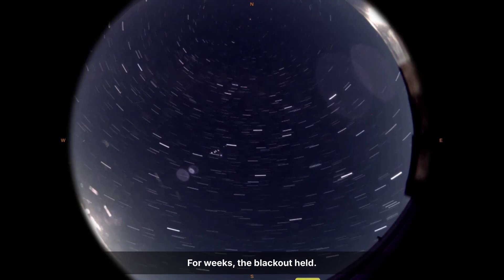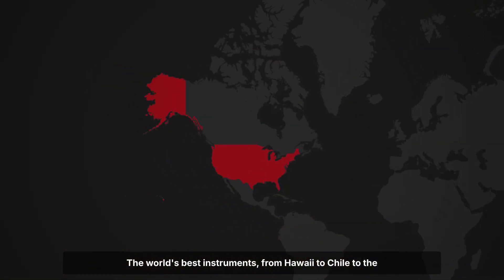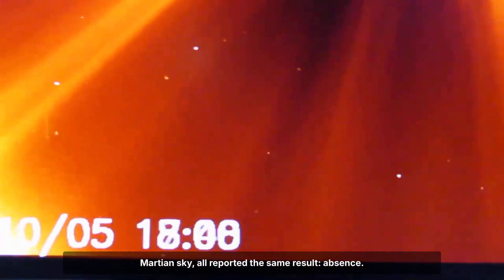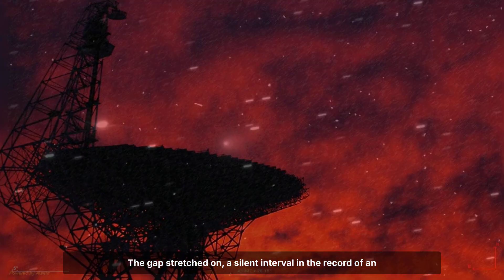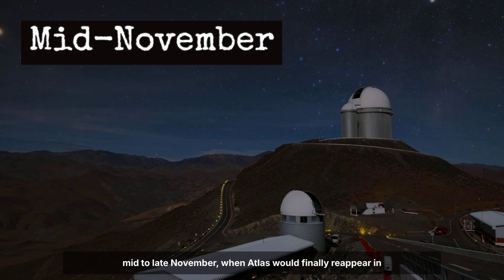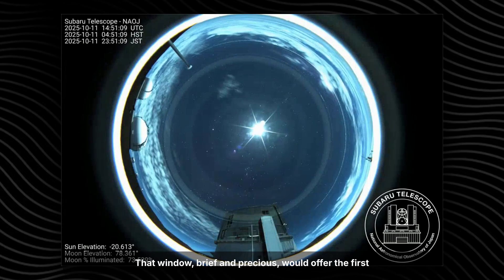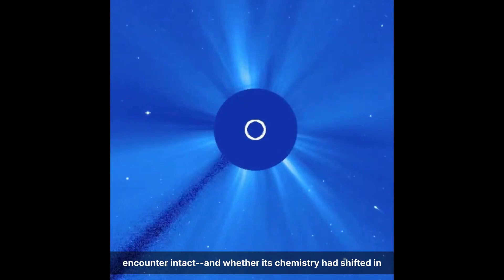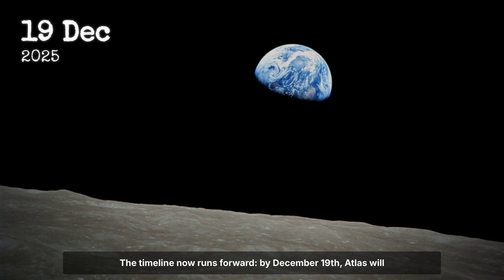For weeks, the blackout held. No new detections. No last-minute breakthroughs. The world's best instruments – from Hawaii to Chile to the Martian sky – all reported the same result: absence. The gap stretched on, a silent interval in the record of an object that might never return. Astronomers recalibrated their hopes, marking calendars for mid to late November, when Atlas would finally reappear in the dawn sky. That window, brief and precious, would offer the first chance to test whether the comet survived its solar encounter intact.